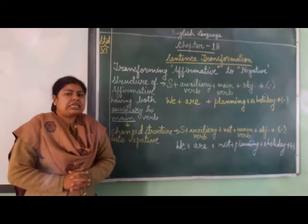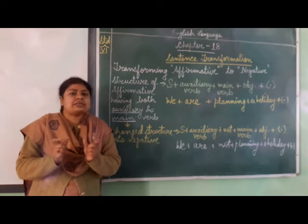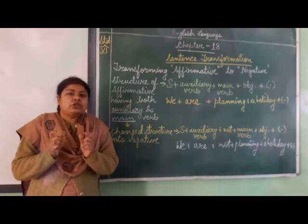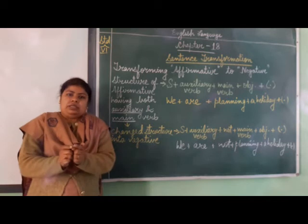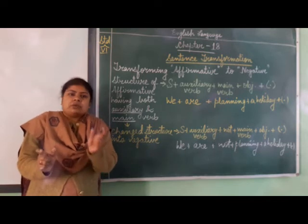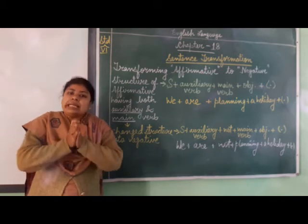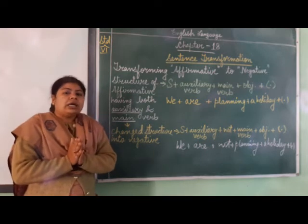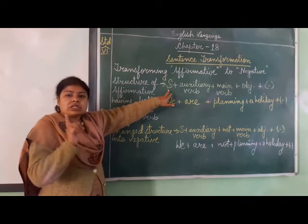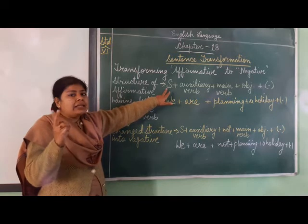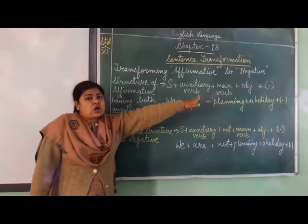It's a very easy thing to keep in mind: if we have two verbs in a sentence, we will put the word 'not' — or its short form — in between these two verbs, that is between the auxiliary verb and the main verb. So the structure will be: Subject + Auxiliary Verb + Not + Main Verb + Object + full stop.